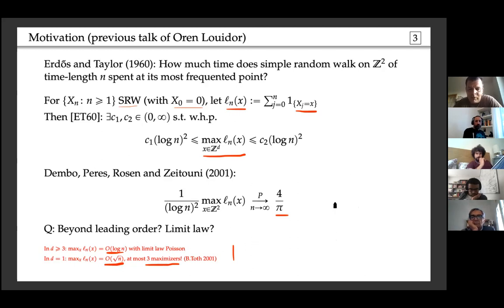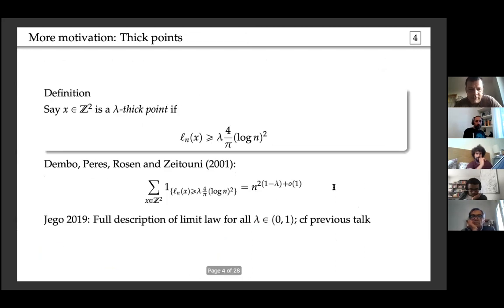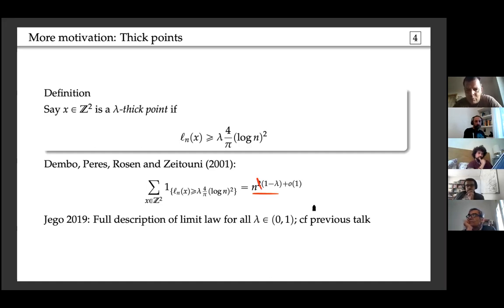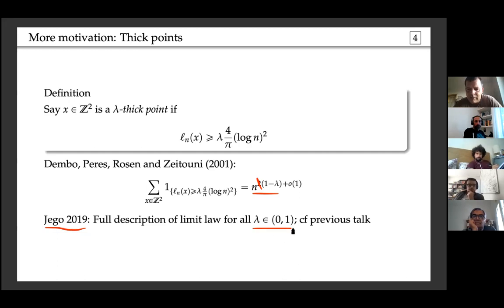The question is: what can we say beyond the leading order and what is the limit law? You can look at lambda-thick points, where the local time is a lambda multiple of its leading order maximum. The paper quantified the leading order number of such points for a random walk of time length n, showing the count scales like n to the power (1 − λ). The control of the subleading order term was done by Jego in 2019, who provided the full description of the limit law in these subcritical cases.